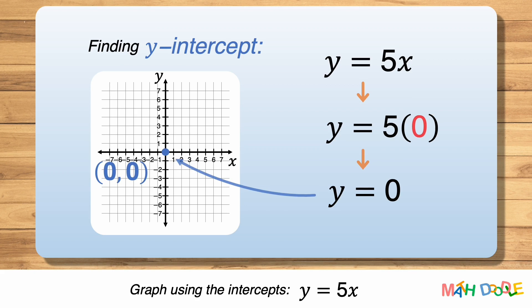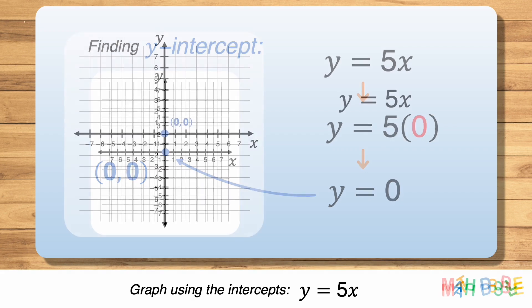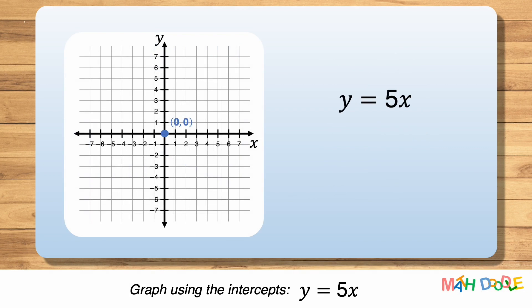This means that the x and y-intercepts of the line are the same, and the line of the equation has only one intercept, which is (0, 0). So, let's find two more points the line of the equation passes through.